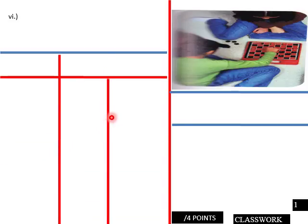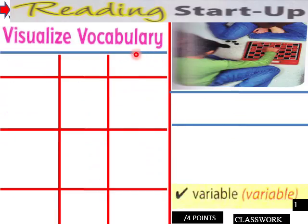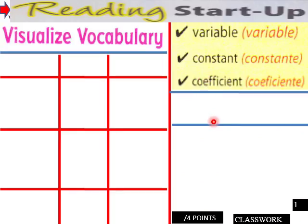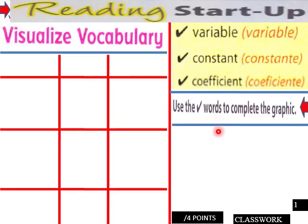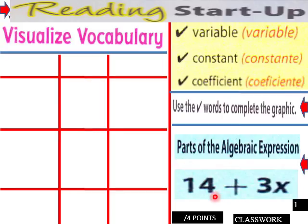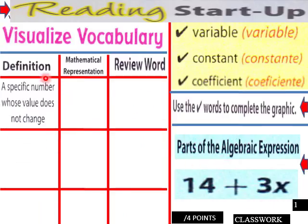We usually start out with a reading exercise: reading startup, visualize vocabulary — variable, constant, coefficient — and then use the check words to complete the graphic. Parts of an algebraic expression: 14 plus 3x. Here's an algebraic expression definition: mathematical representation. Then the review word for constant — a specific number whose value does not change — and here's 14.